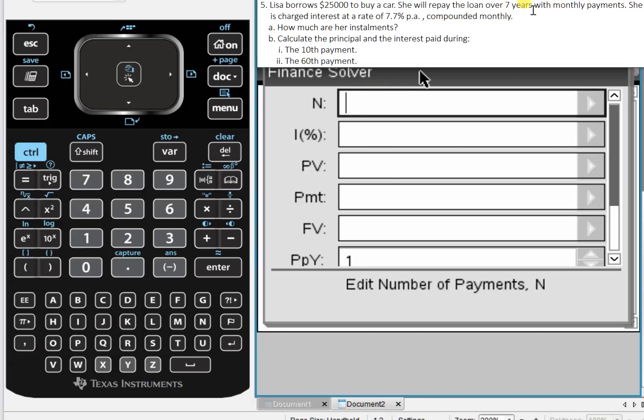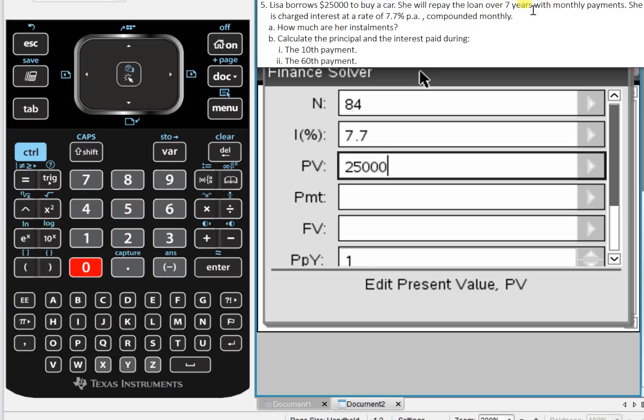She's repaying the loan over 7 years with monthly payments. So N is 7 times 12, which is 84. The interest rate is 7.7%. PV, that's the amount of the loan, that is positive $25,000.